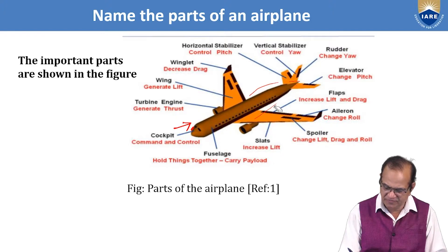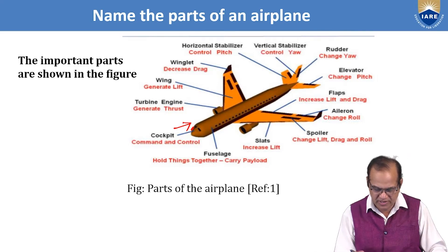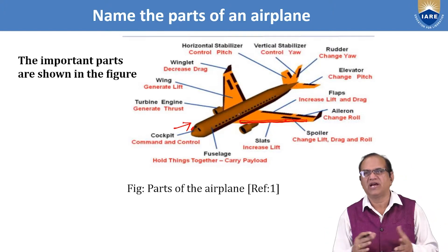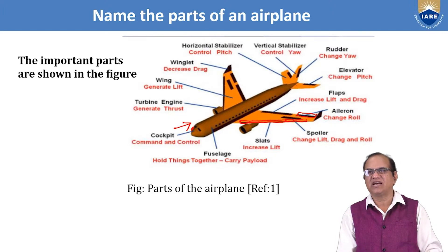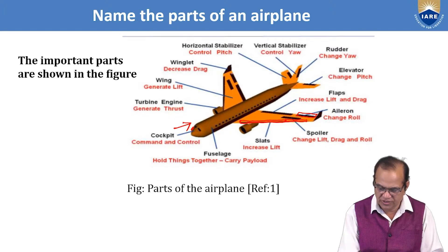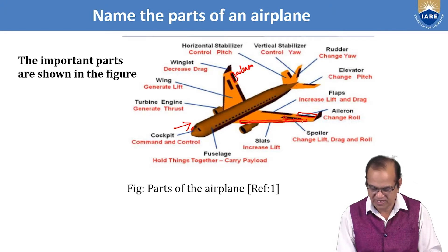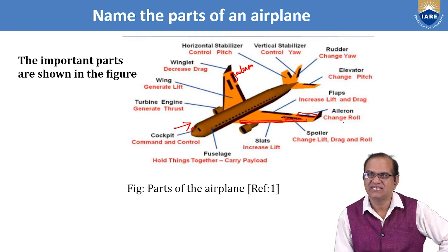The fuselage accommodates passengers, cargo, fuel, equipment, and pilots — everything. Then there are slats, which are leading-edge devices that can be moved forward or rearward. We also have ailerons on both wings at the trailing edge of the tip on each side. There is also the spoiler, shown in black on the wing. Spoilers change lift, drag, and roll. Slats increase lift. Ailerons change roll. And here we have the flaps.